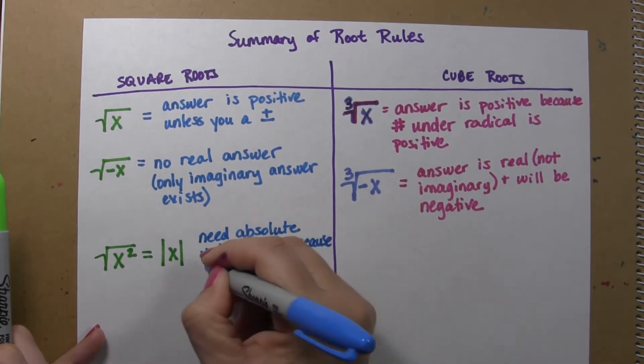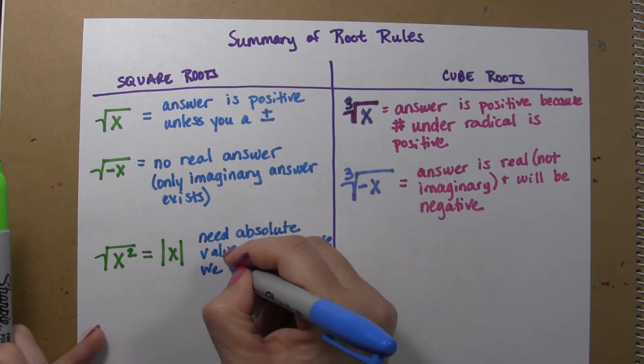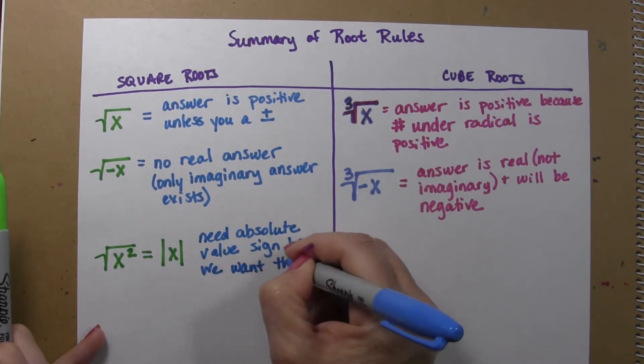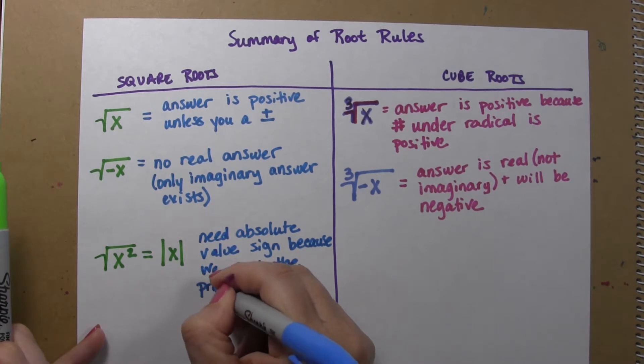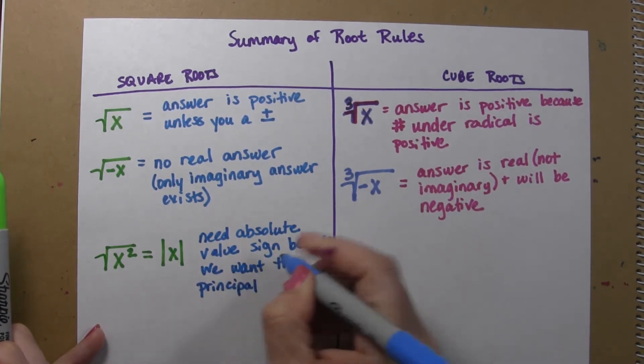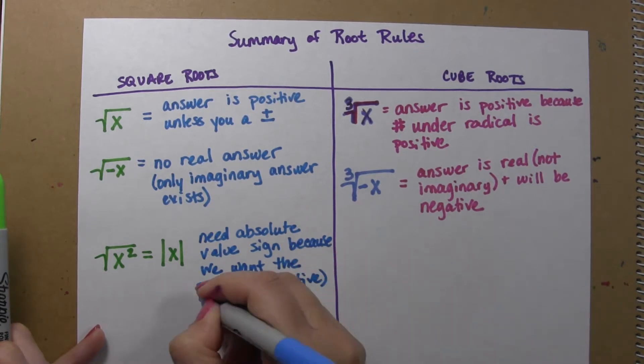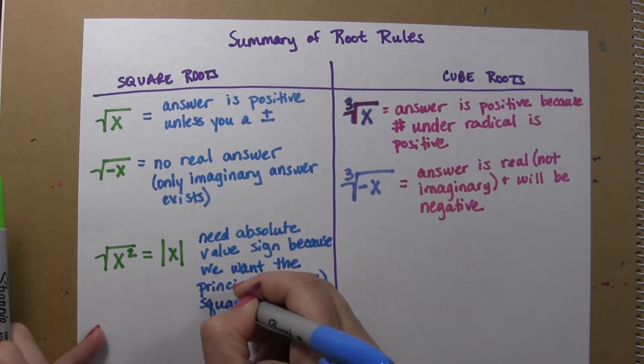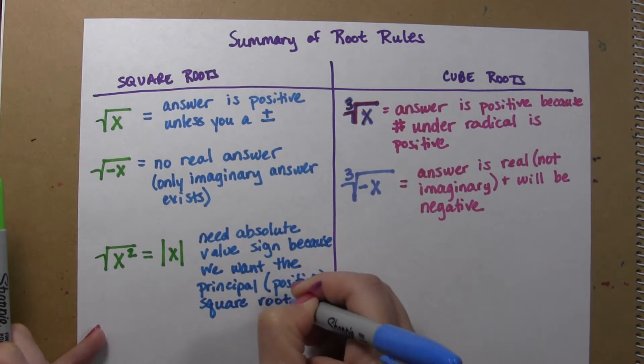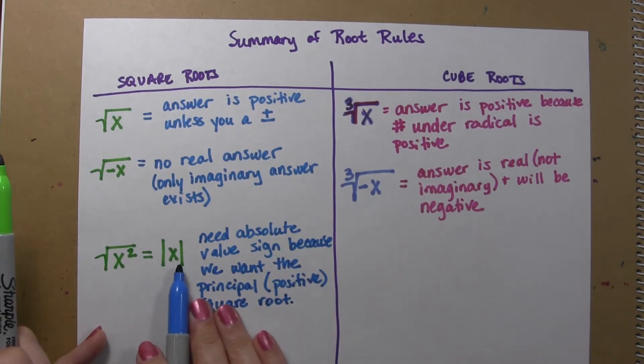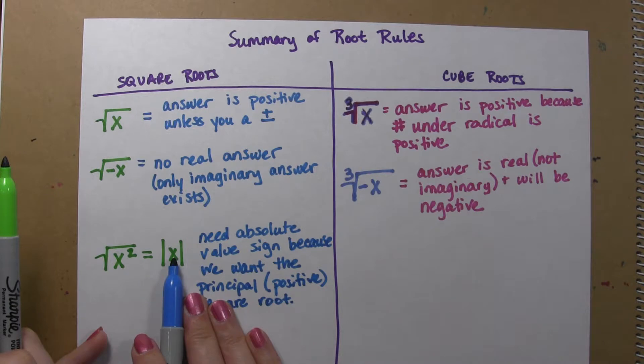And I'm going to say here that we need absolute value signs because we want the principal square root. And the principal square root is the positive square root. So since we want a positive answer, we're going to force it to be positive right here.